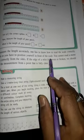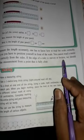To do so, you have to position yourself in front of the scale. You cannot read meter scales correctly from the side. If the edges of the ruler are uneven or broken,